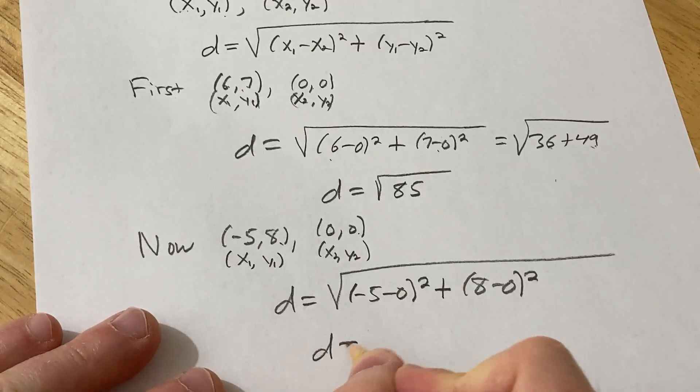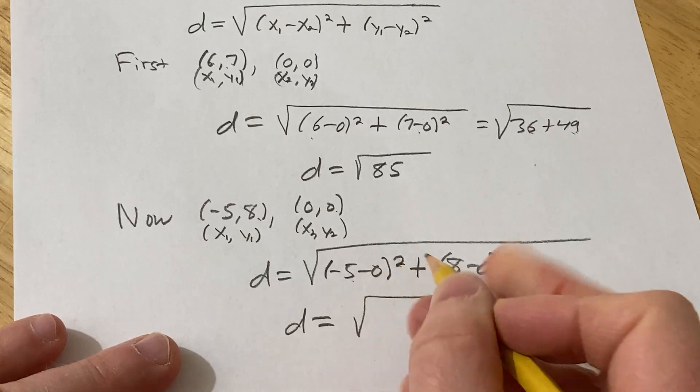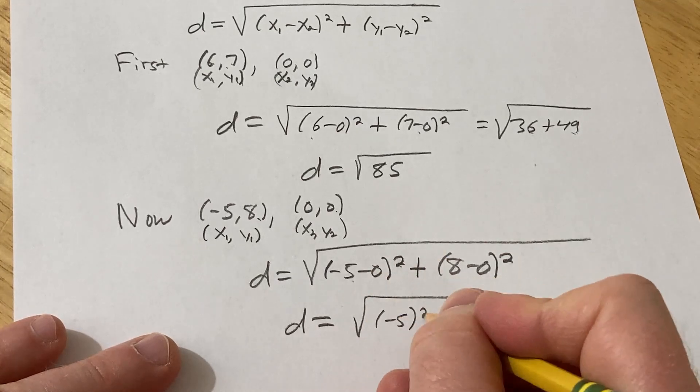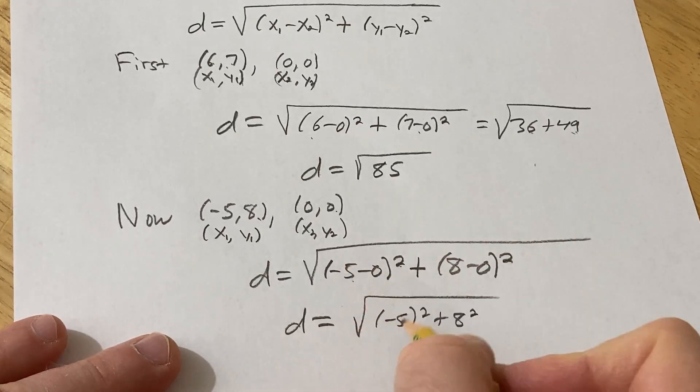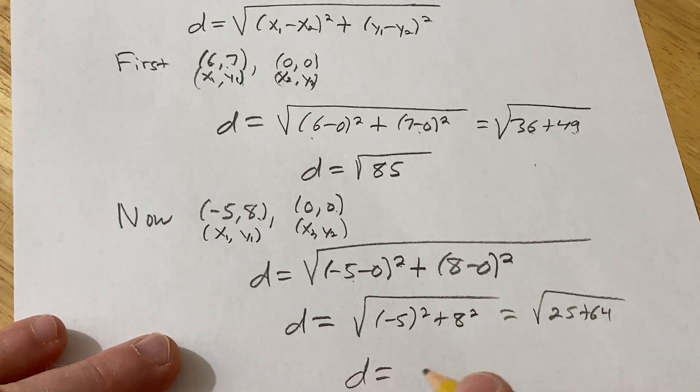So little d is equal to, so let's see what happens here. This will be negative 5, squared is 25, I'll show an extra step here, just for clarity. Subtract 0, you get that, so now we get 25, plus 64. So d is equal to the square root of 89.